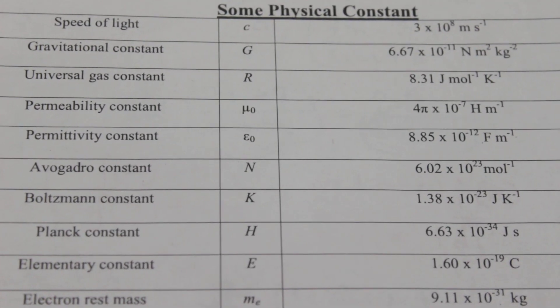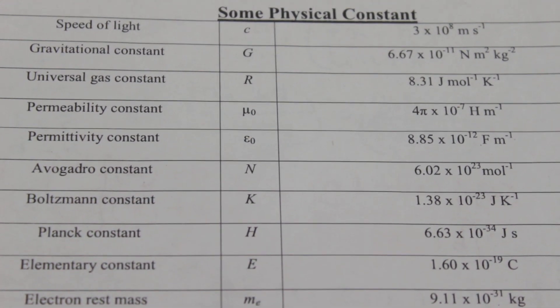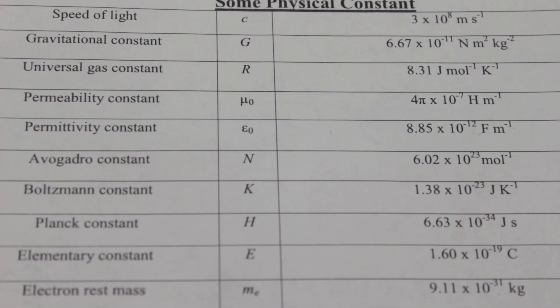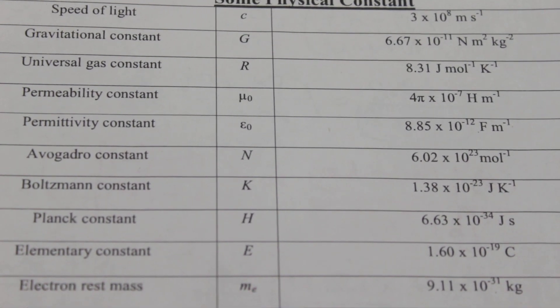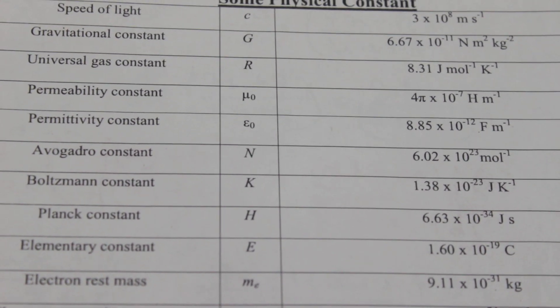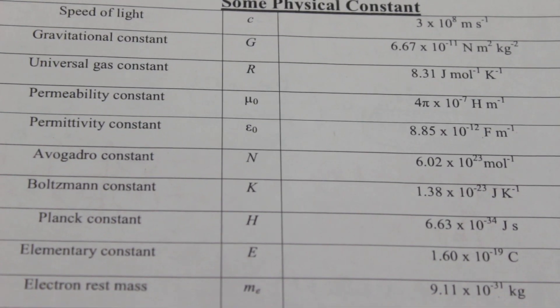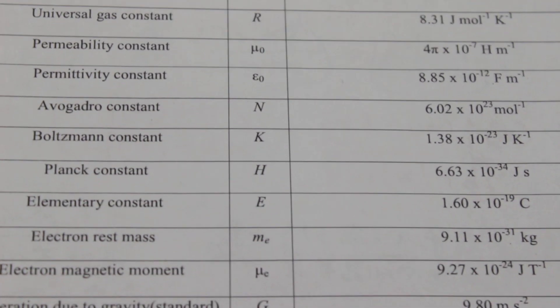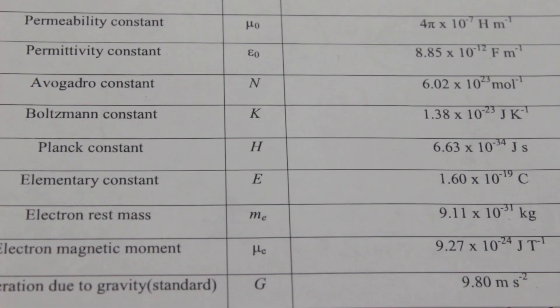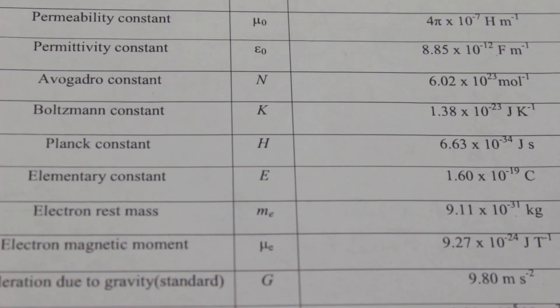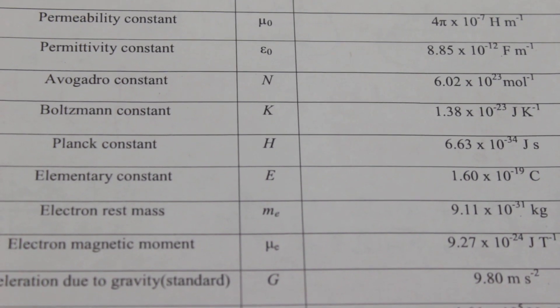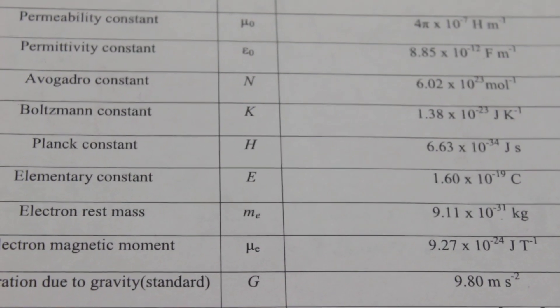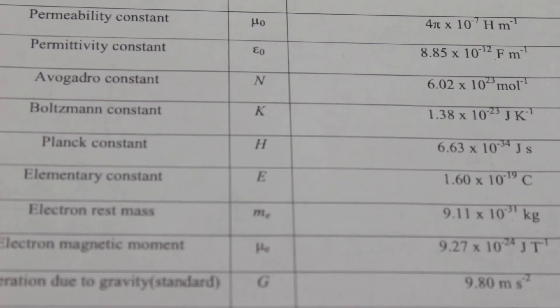All the values are in SI. First, we will start with speed of light whose value is 3 times 10 to the power 8 meters per second. Next one is gravitational constant, capital G, whose value is 6.67 times 10 to the power minus 11. Next is universal gas constant, whose value is 8.31. Next, permeability, more specifically free space permeability, 4 pi times 10 to the power minus 7.